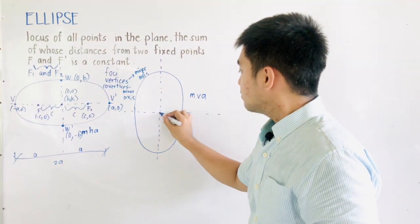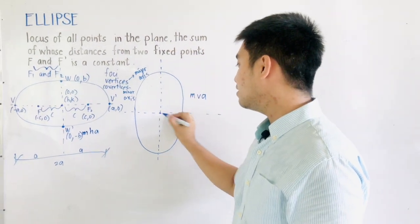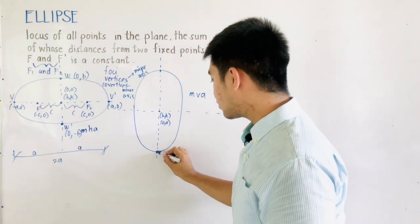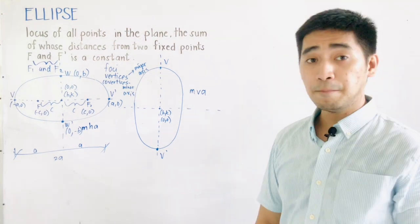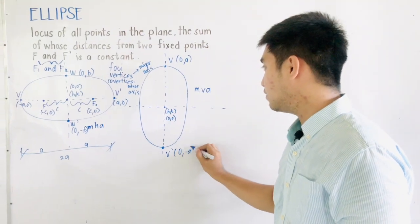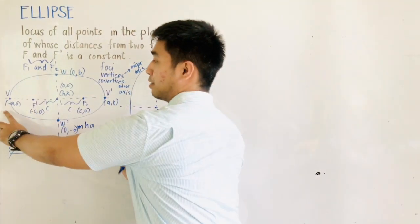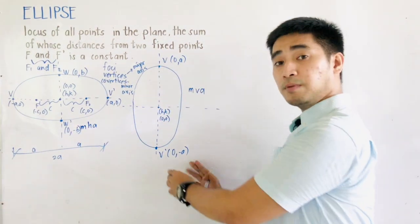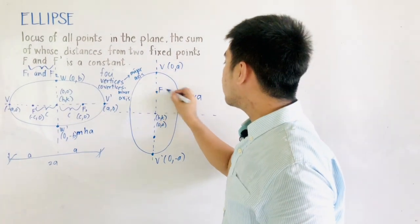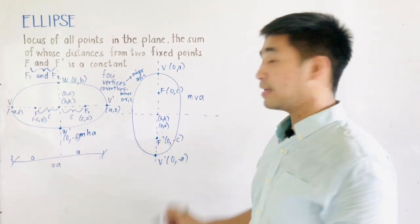Now for the major vertical axis: the center is located at H and K. This is our major axis, so these are V and V'. Since this is vertical, the vertices are at 0 and positive A, and 0 and negative A — the points interchange compared to the horizontal case. The foci are F and F', located at 0 and C, and 0 and negative C.